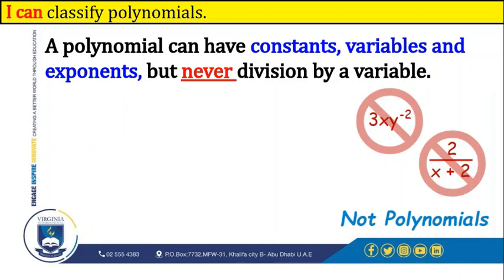but never division by a variable. For example, a polynomial can never be powered to a negative number, and it can never be divided by an x exponent. The x can never be in the denominator.